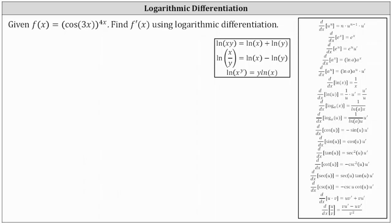We are given f of x equals cosine of 3x raised to the power of 4x, and we're asked to find f prime of x using logarithmic differentiation. Notice how if the exponent was just 4, we could determine the derivative using the chain rule, but because the exponent is a function of x, we will use logarithmic differentiation to determine the derivative function.